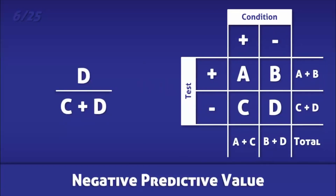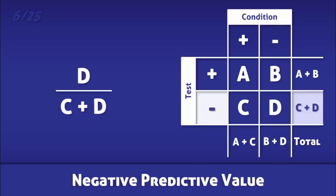The negative predictive value is the proportion of negative test results that correctly exclude a condition. It is calculated by dividing the number of true negatives by the total number of negative tests.